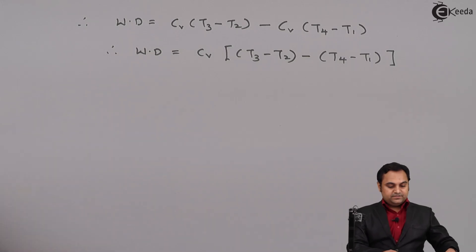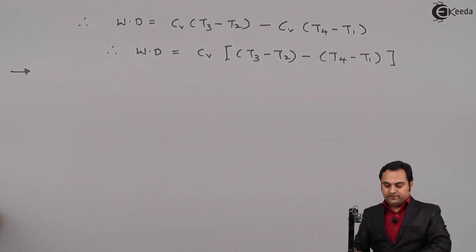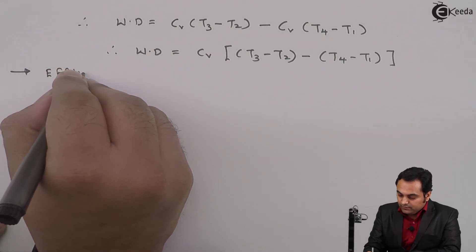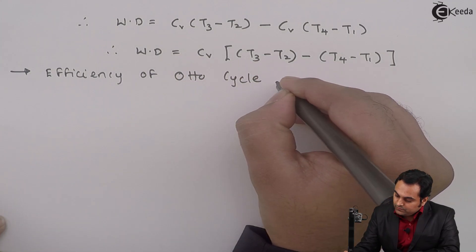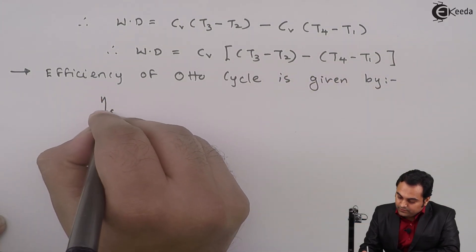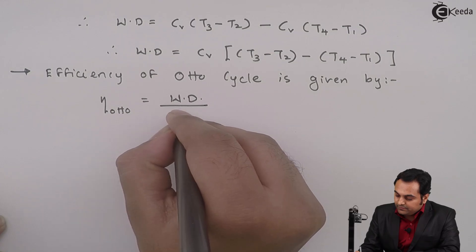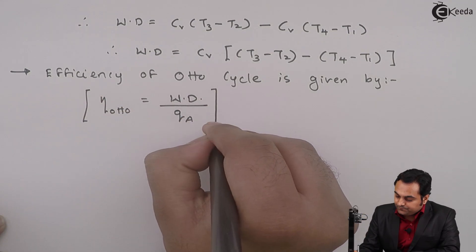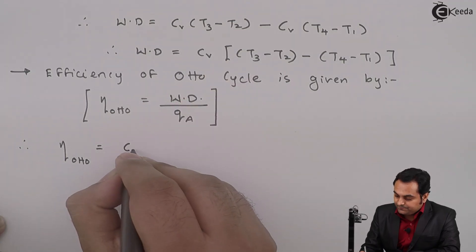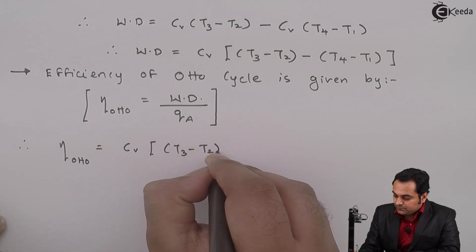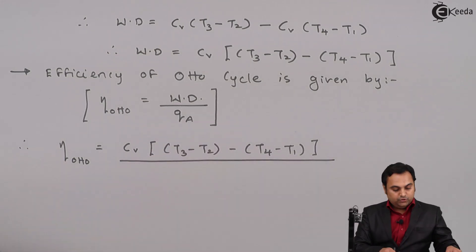Next, since we are deriving the efficiency of Otto cycle, the efficiency is given by the general formula: work done upon heat supplied. Therefore, efficiency of Otto cycle = WD / QA = Cv·[(T3 − T2) − (T4 − T1)] / [Cv·(T3 − T2)]. Here Cv cancels from numerator and denominator.